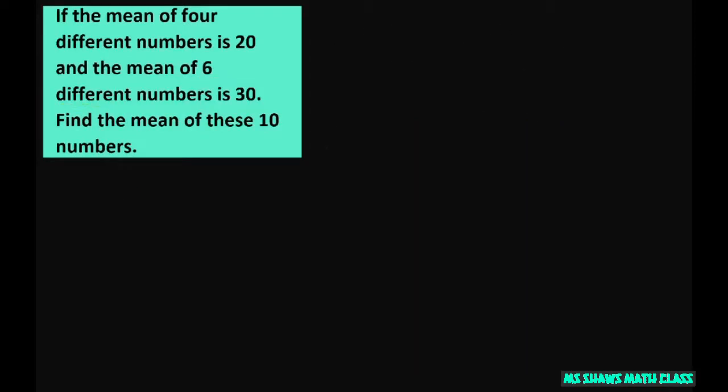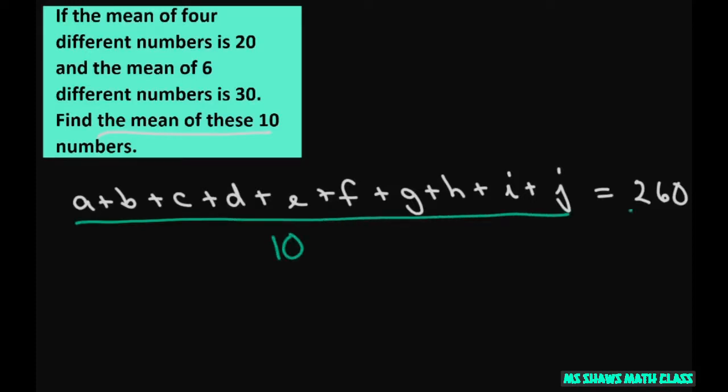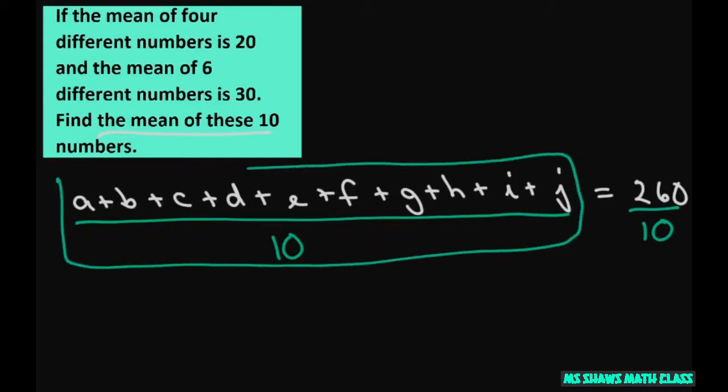So now let's add them all up together. A plus B plus C plus D plus E plus F plus G plus H plus I plus J. We know all of those add up to 260. But if I have to find the mean of these, then I need to divide this by 10 and this by 10. So basically, the mean of these 10 numbers is going to be 260 divided by 10, which is 26.